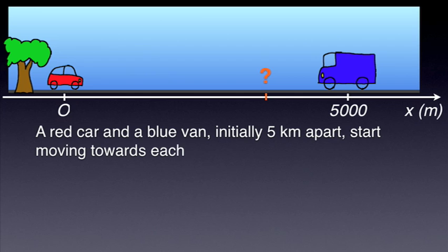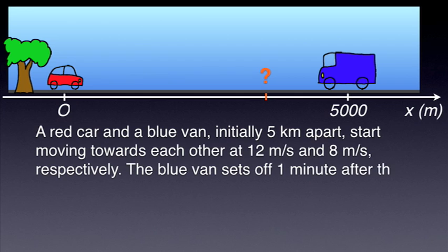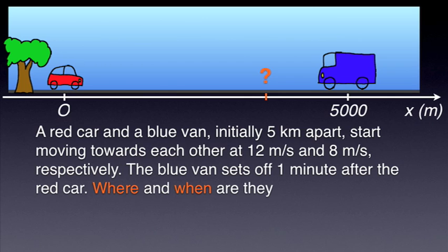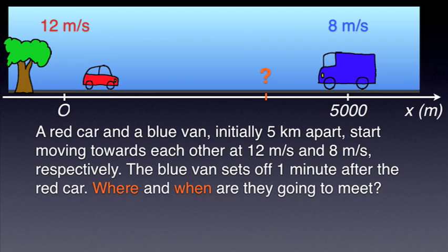start moving towards each other at 12 m/s and 8 m/s respectively. The blue van sets off one minute after the red car. Where and when are they going to meet?